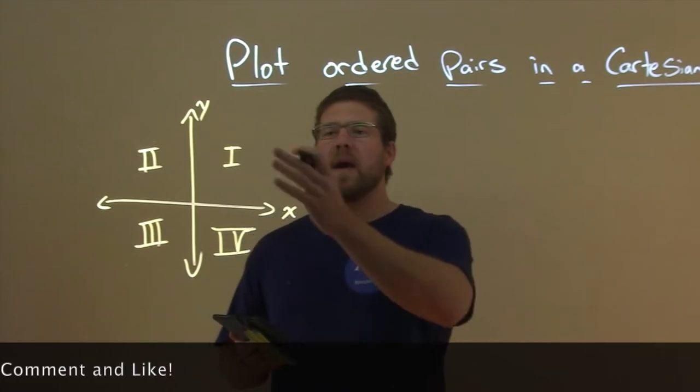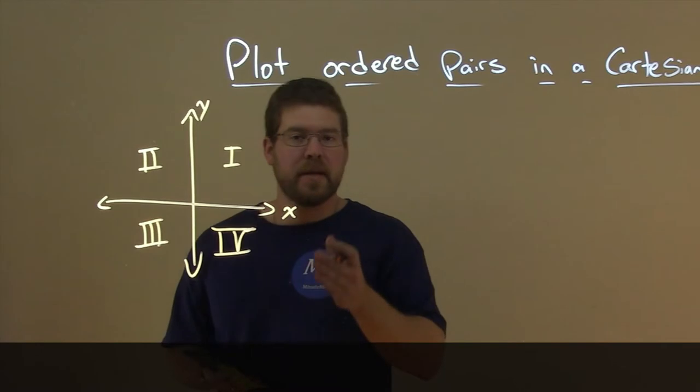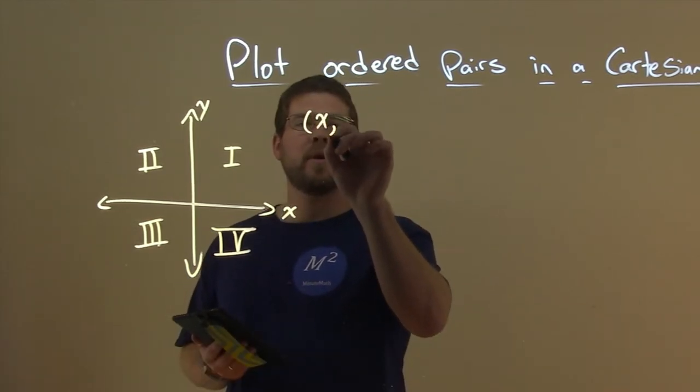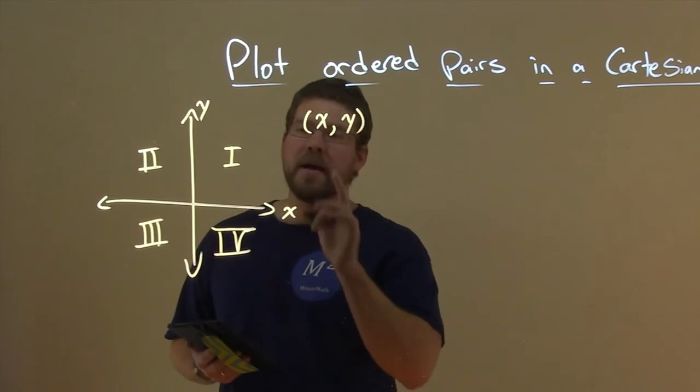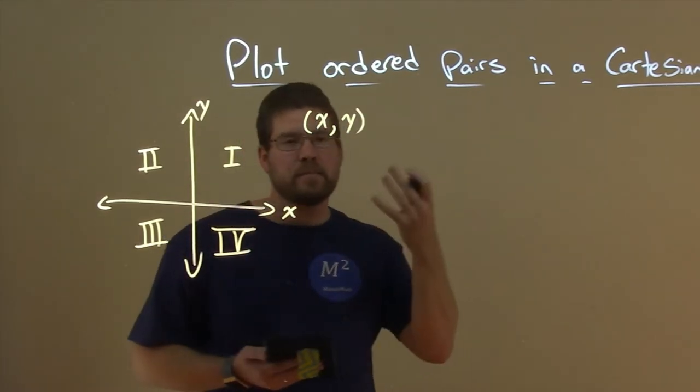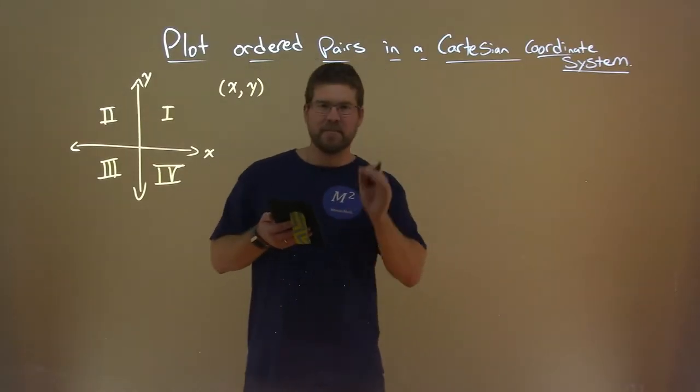We have our four quadrants, and points that are labeled within these quadrants have a combination of the x and y-axis. You have an x-point comma y-point, and together they make up a point somewhere on this plane. The Cartesian coordinate system is defined as such.